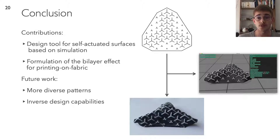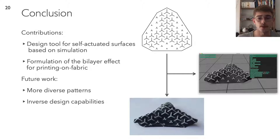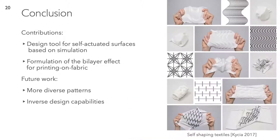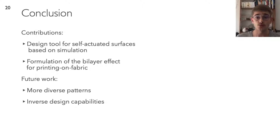To summarize, we created a design tool to experiment with self-actuated surfaces using a dense pattern of stars, which is powerful enough to create interesting shape variations yet simple enough to use parametrically with a single varying parameter. We discovered a bi-layer phenomenon with instrumental effect on the behavior of our printed-on-fabric designs. For future work, we'd like to experiment with more varied patterns, and also develop an inverse design tool — so that instead of trial-and-error form finding, we can find the optimal layout that best reproduces a target geometry when printed.